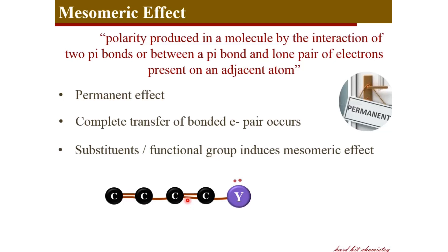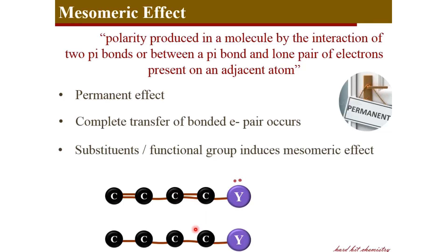Considering this case, here we have a conjugated system where the pi electrons and the lone pair are in conjugation. We need either the pi electrons to be conjugated or a lone pair in conjugation with a pi electron. In this case, this lone pair of electrons present on heteroatom Y can be moved to this bond, and consequently a new pi bond is established. So you have this heteroatom becoming positive, and in the next step this pi bond is displaced to a new position, and the next pi bond which is in conjugation with the previous one now gets moved to this atom.